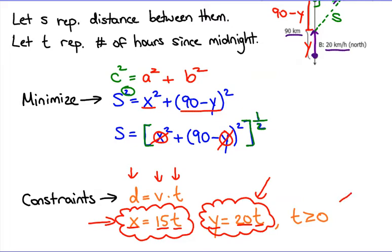You do have to mention the restrictions on T. Obviously T can't be negative — there's no such thing as negative hours. So it can be zero, which would mean midnight exactly. The smallest T could be is zero, and then it could be anything bigger than zero.